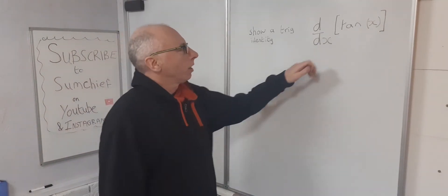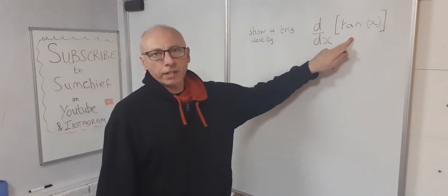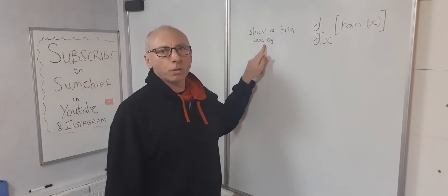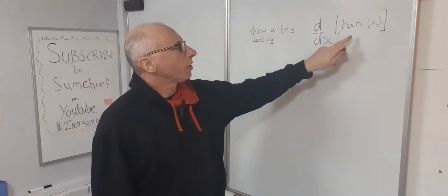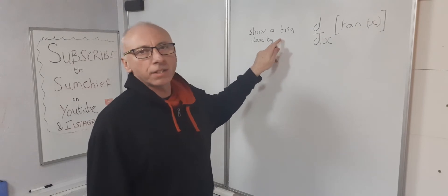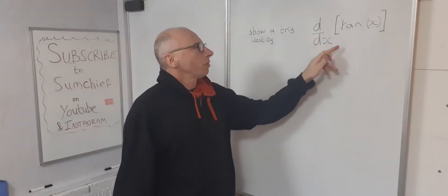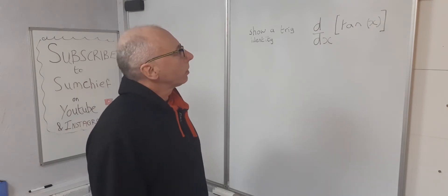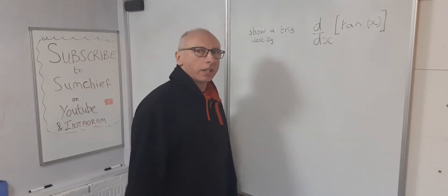Today we're going to do the derivative of tangent x, and while we're doing that we're going to show a trig identity. We're going to do this derivative to also show this at the same time. So derivative of tangent x — let's write that in terms of sine and cosine.